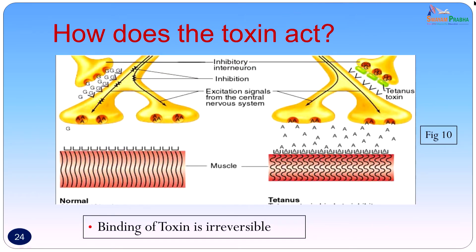In a normal muscle, excitatory signals come from the central nervous system and the muscle contracts, while the muscle is made to relax because of inhibitory signals from the inhibitory interneurons. Glycine is released by these inhibitory interneurons, preventing the further release of acetylcholine so the muscle can relax. In tetanus, the excitatory signals remain the same. However, the tetanus toxin binds on the motor nerve end plate and does not let acetylcholine get released, so there is no inhibitory effect of the inhibitory interneuron. This binding is irreversible and the muscle stays in a state of contraction.